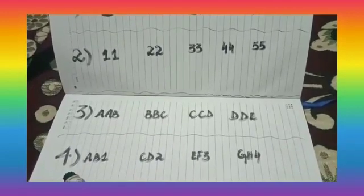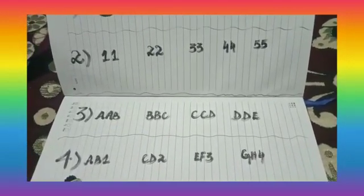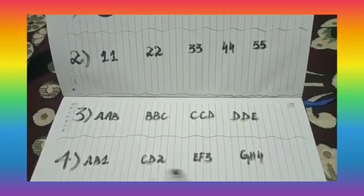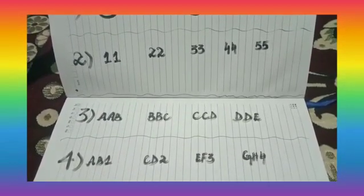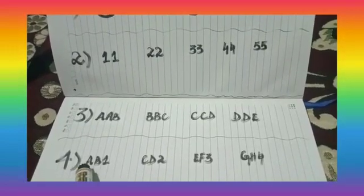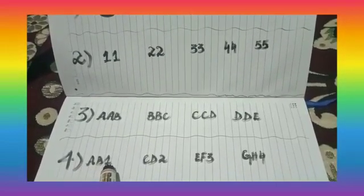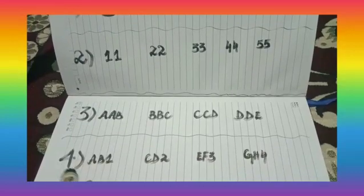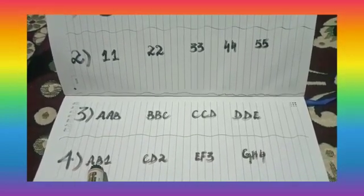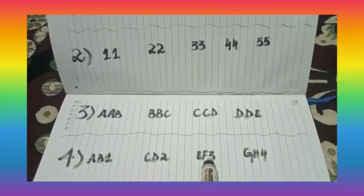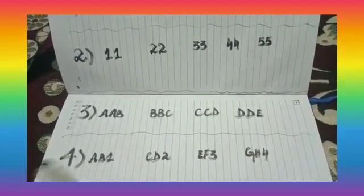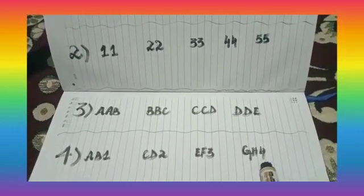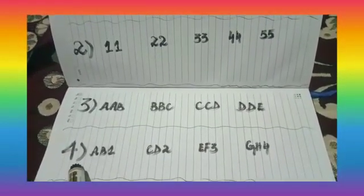In the fourth example we have a code sequence. A code is the combination of letters as well as numbers. In this example, if we look at the letters we can read A, B, C, D, E, F, G, and H, and for the numbers we have 1, 2, 3, and 4. This sequence forms a code pattern.